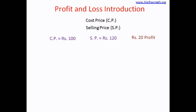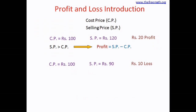In the first example, CP was 100 rupees and SP was 120 rupees. Because SP was higher than CP, we had 20 rupees of profit. The formula: if SP is greater than CP, then it is profit, and profit equals SP minus CP. The greater-than symbol shows the bigger side where the arms spread out and the smaller side where they come to a point.